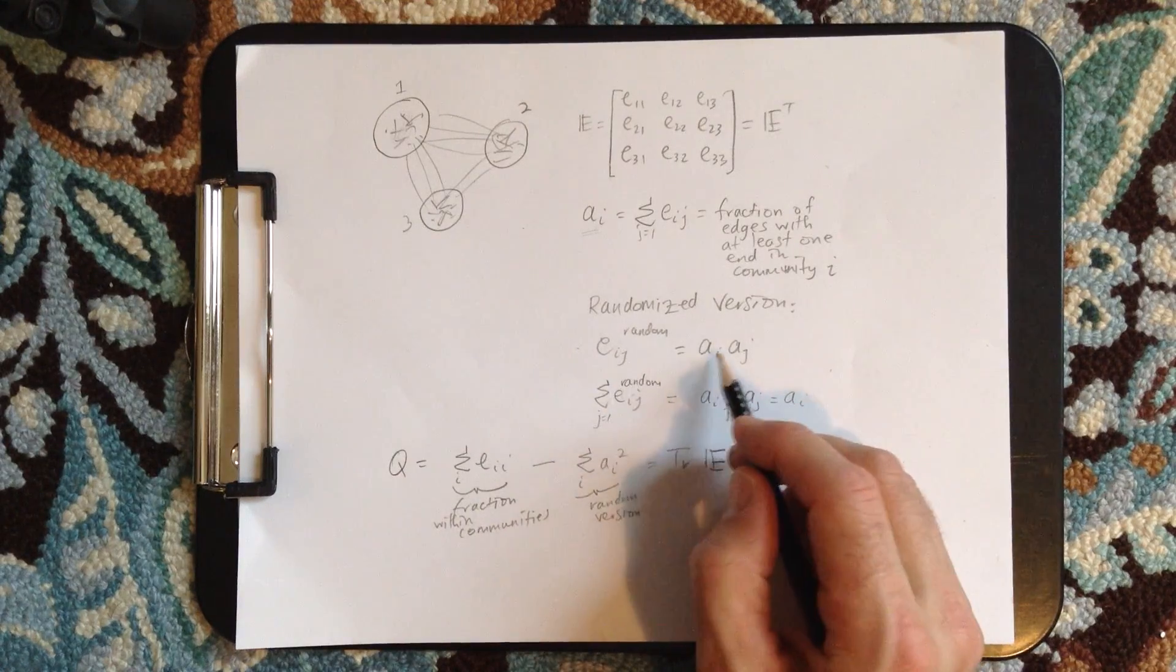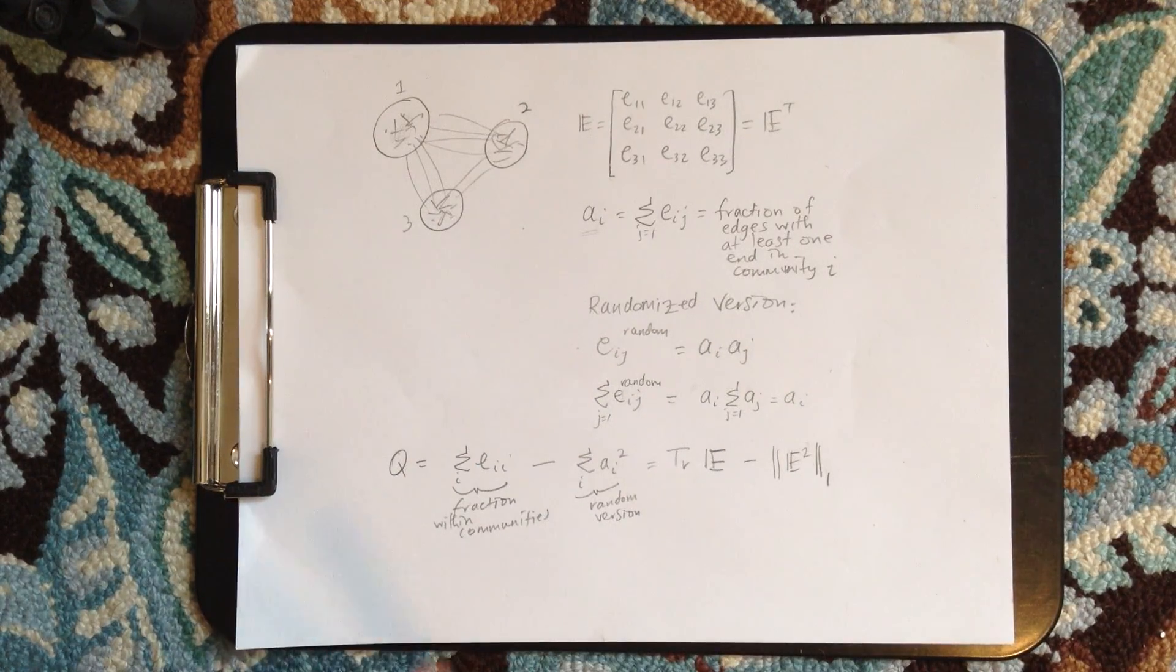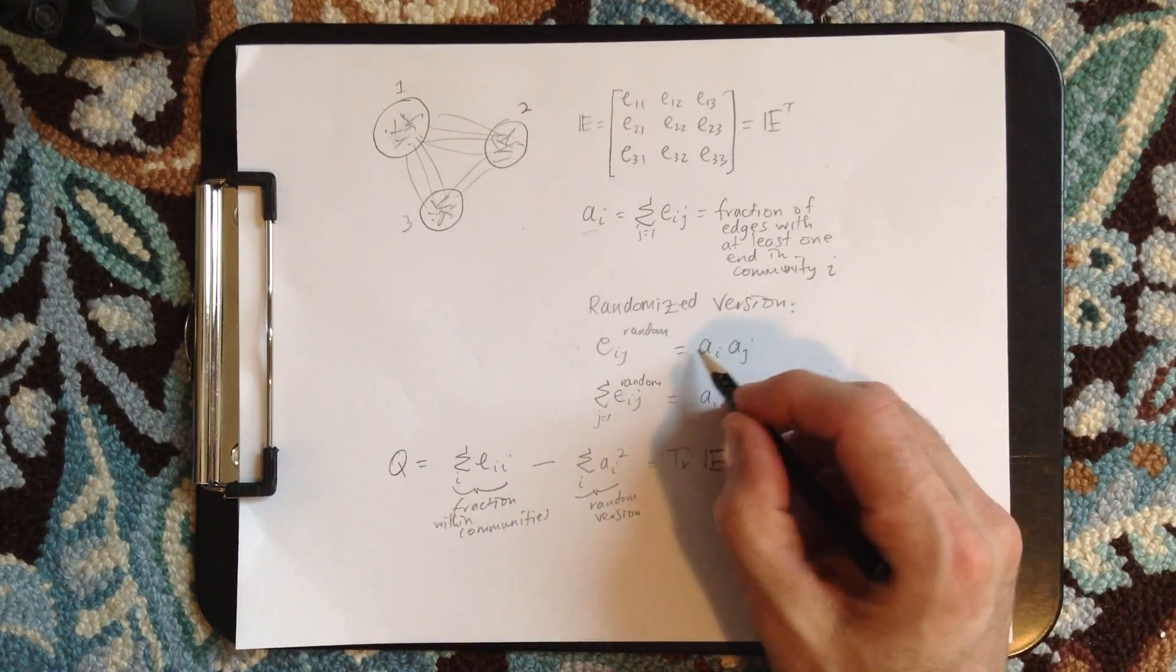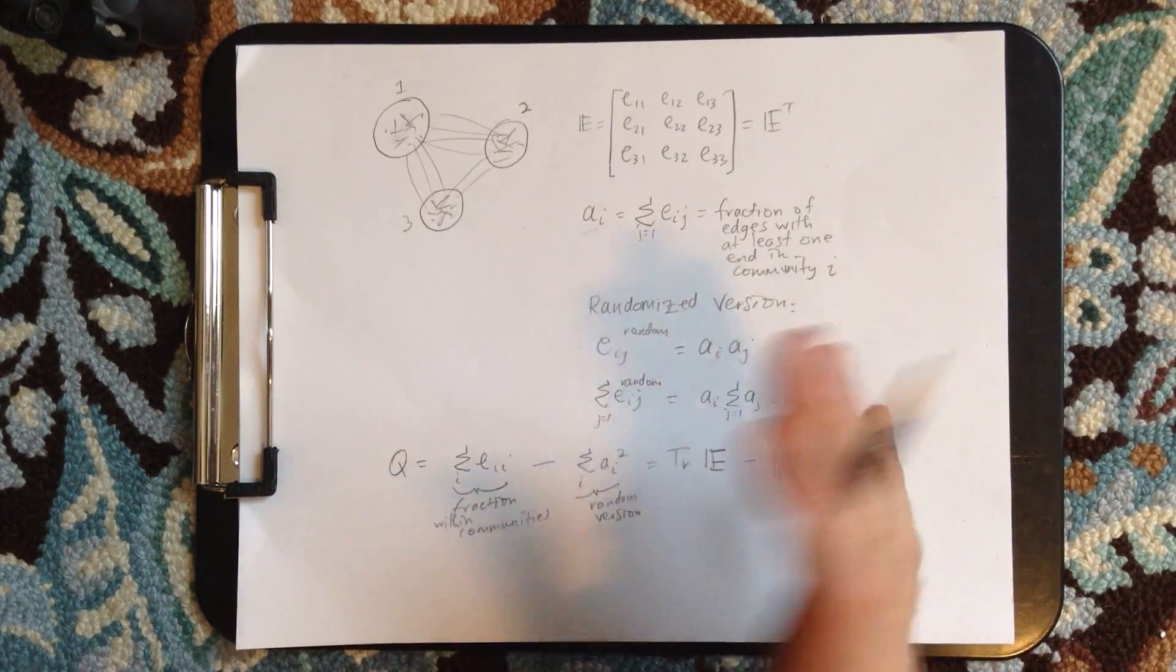So this is the fraction of edges coming out of community I, community J. We just multiply those two guys together. So now it's independent. It's been separated.